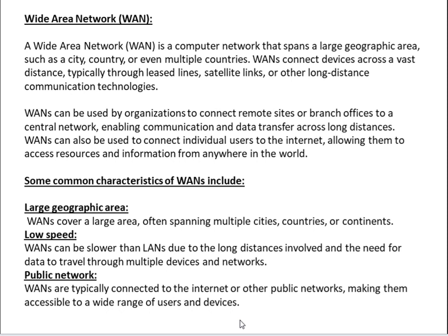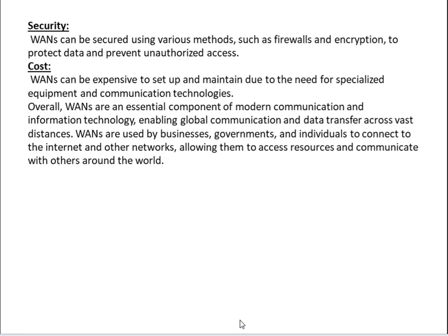WANs typically need data to travel through multiple devices and networks. As a public network, WANs are typically connected to the internet or other public networks, making them accessible to a wide range of users and devices. Security-wise, WANs can be secured using various methods such as firewalls and encryption to protect data and prevent unauthorized access.